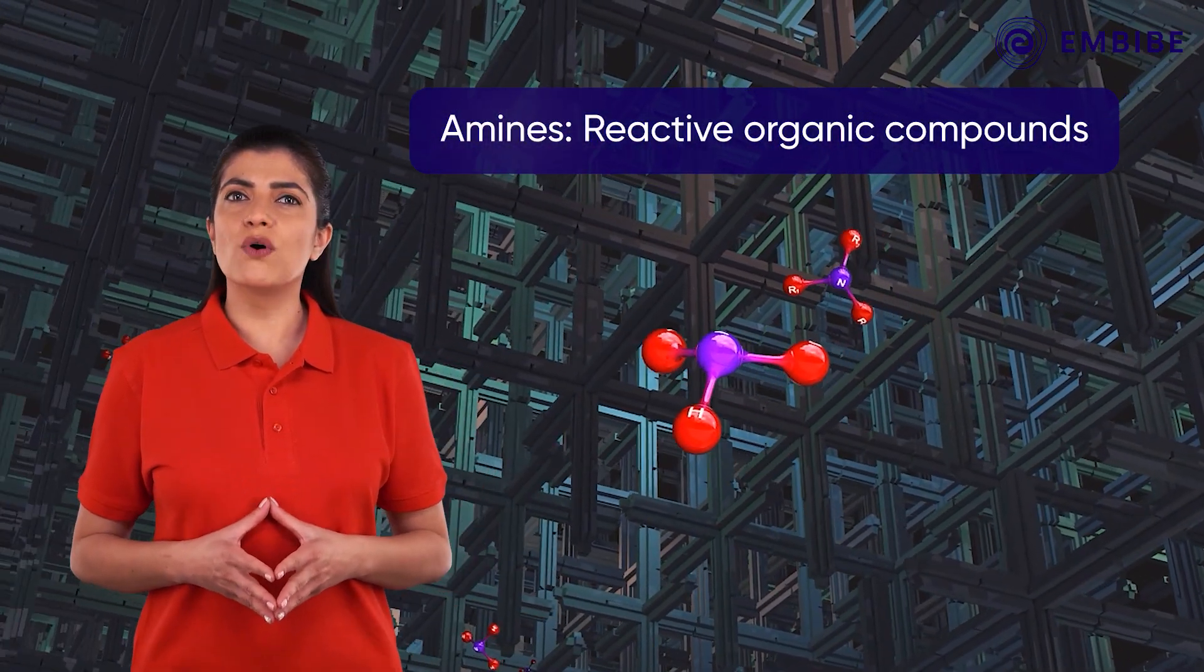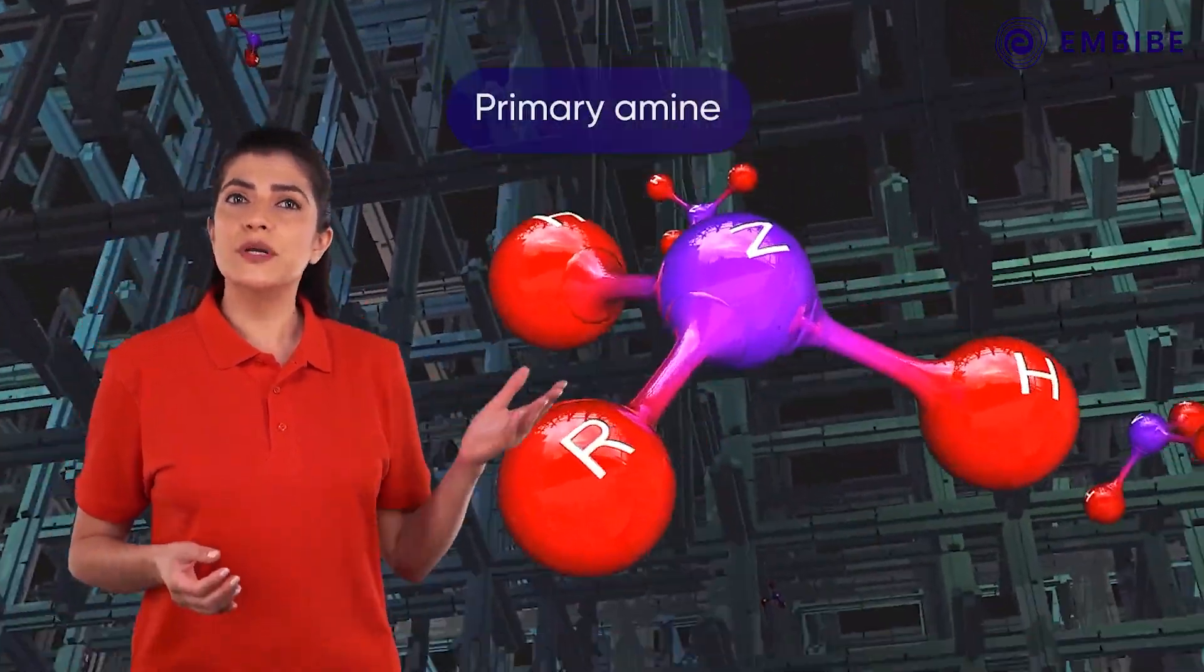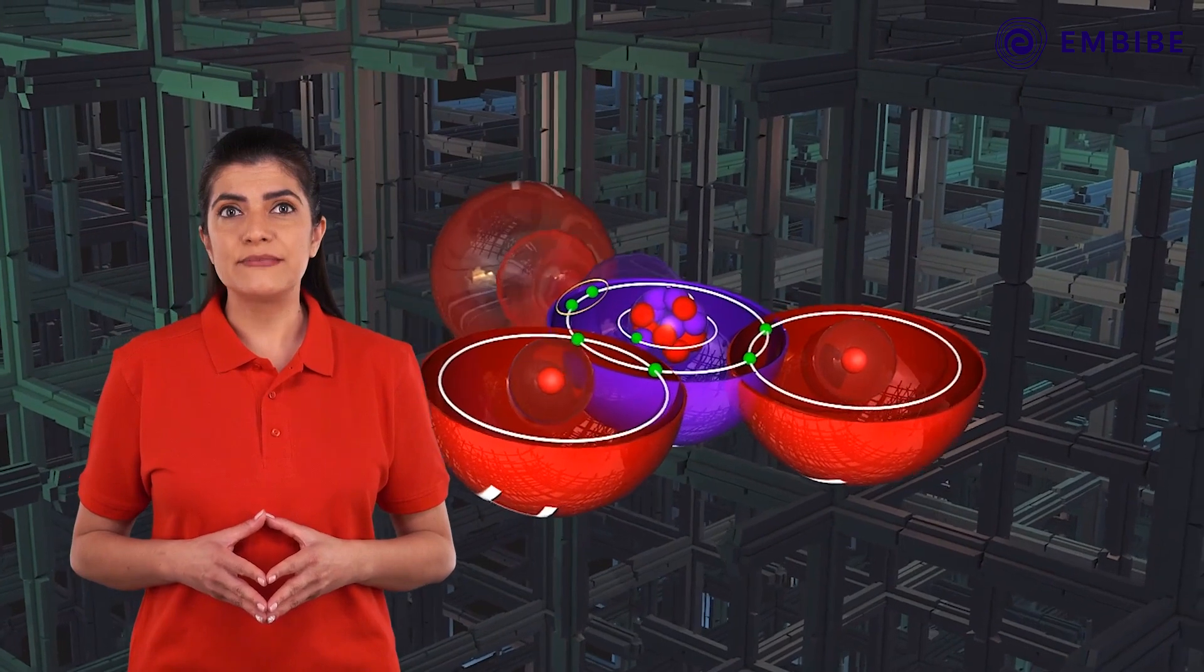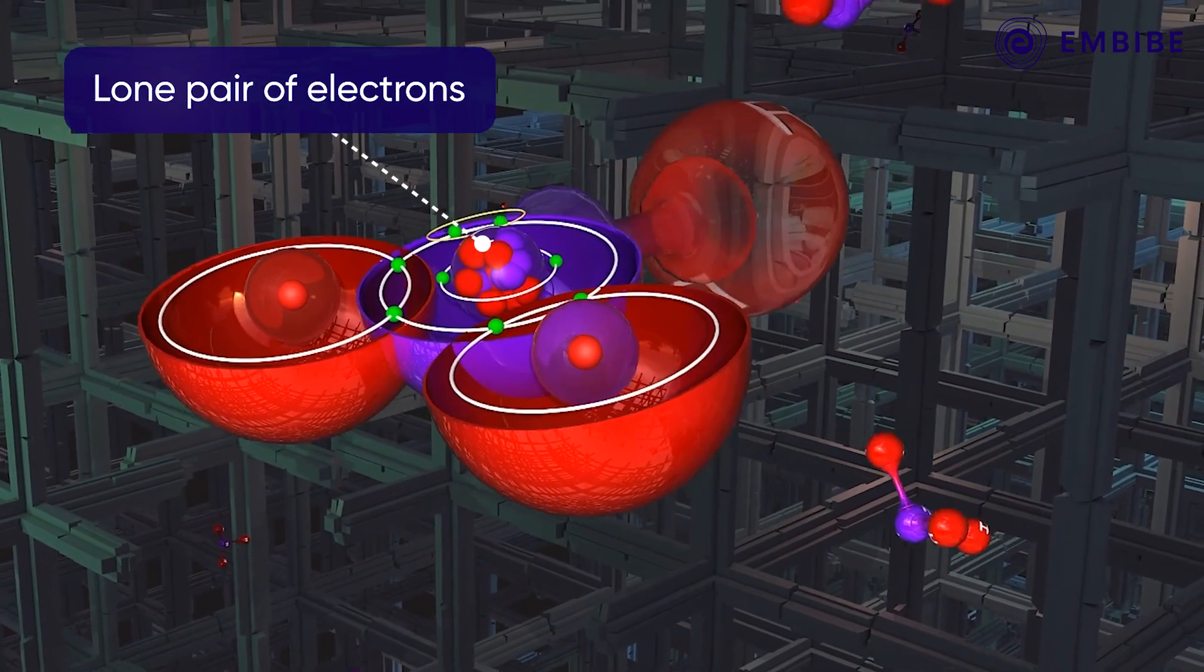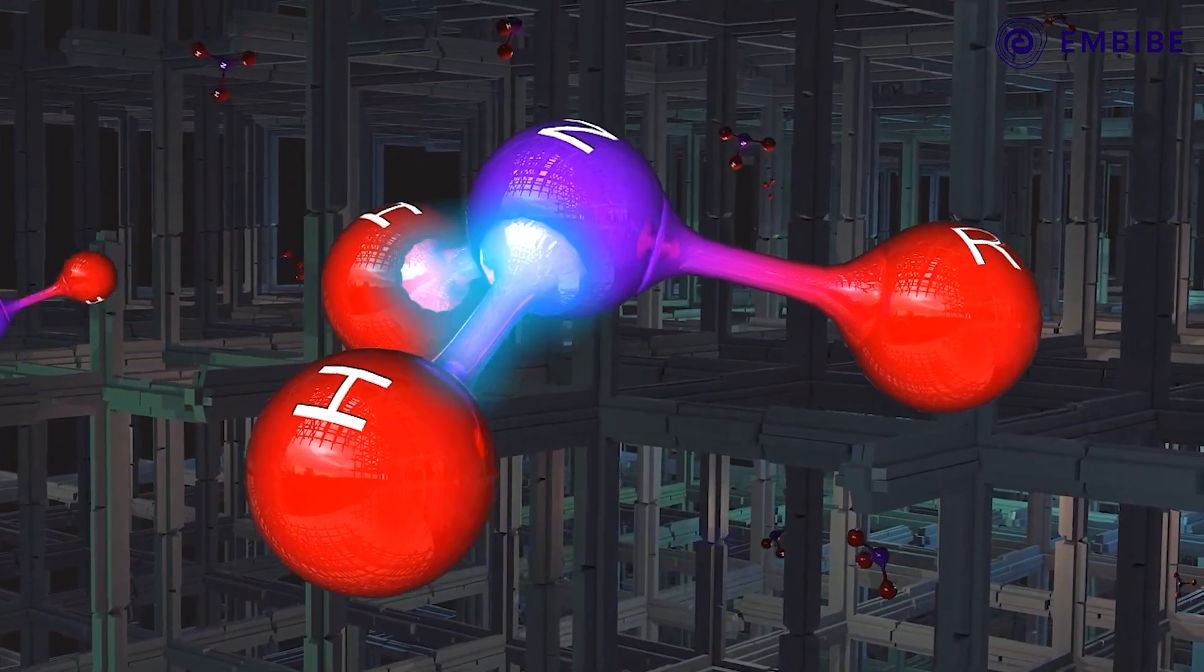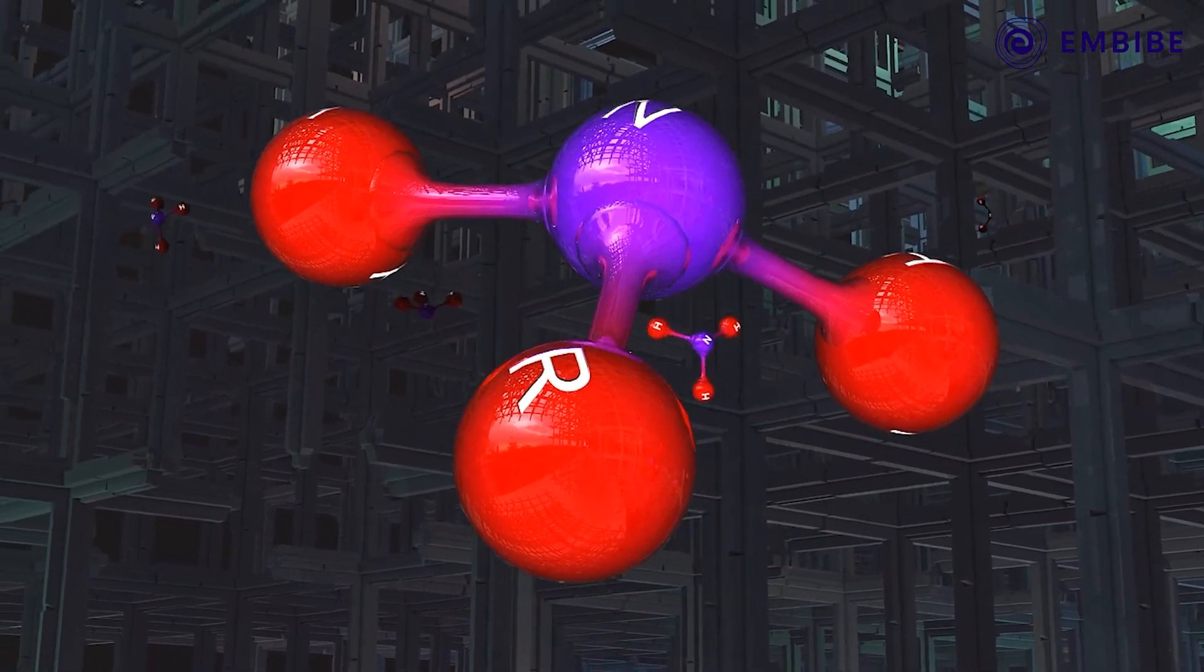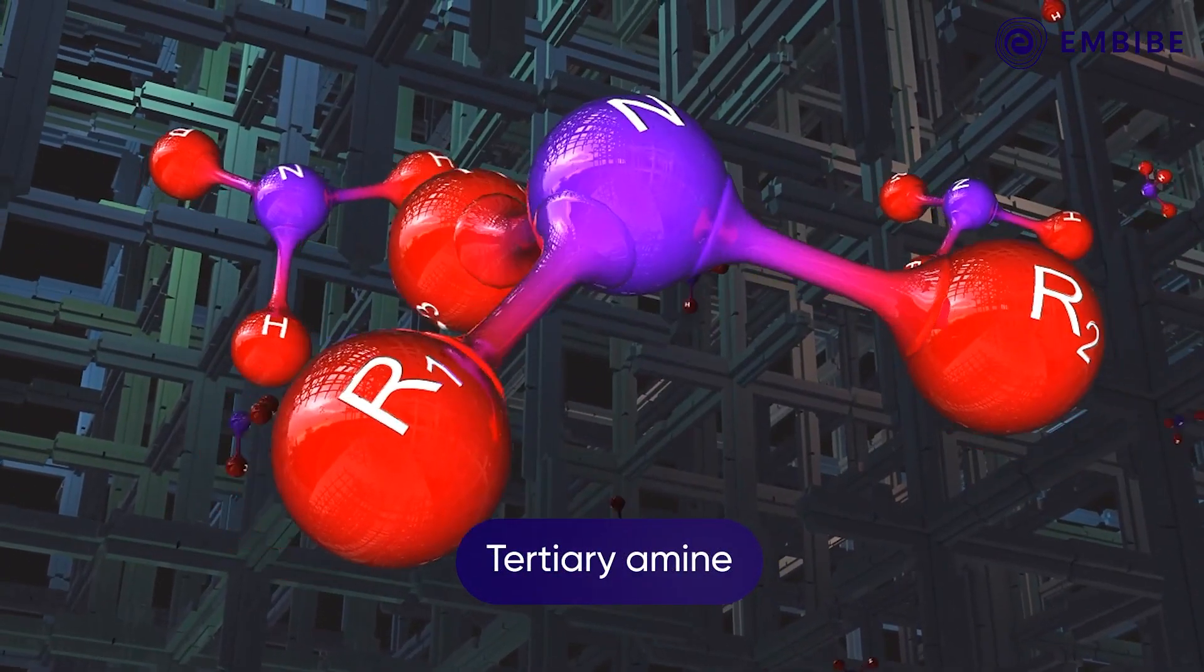Amines are very reactive organic compounds due to the difference in electronegativity between nitrogen and hydrogen atoms, as well as the presence of a lone pair of electrons on nitrogen atoms. Due to this lone pair of electrons present on nitrogen, the amines behave as nucleophiles. The number of hydrogen atoms attached to nitrogen atom also decides the course of reactions of amines. Therefore, the primary, secondary, and tertiary amines differ in many reactions.